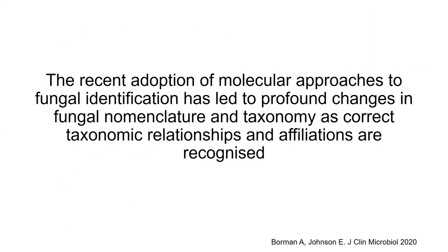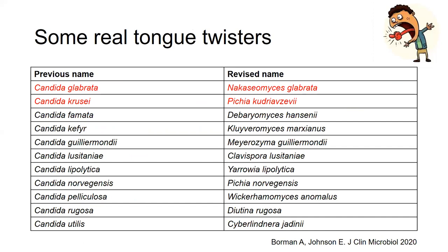Based on use of molecular approaches, two of the major pathogens have recently been renamed. Candida glabrata has been renamed Nakaseomyces glabrata, and Candida krusei is now known as Pichia kudriavzevii. Some of the other species here have also been placed into various other genera.